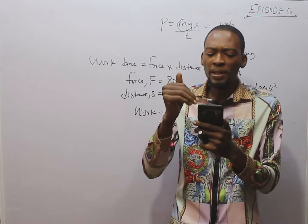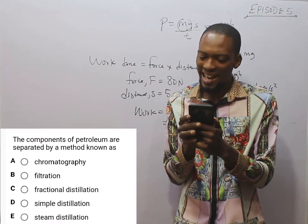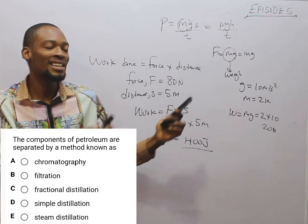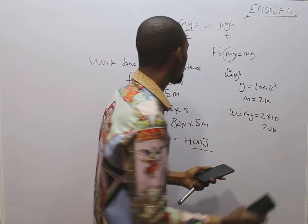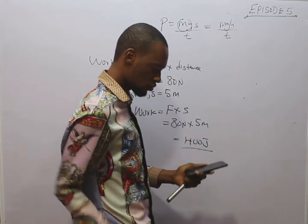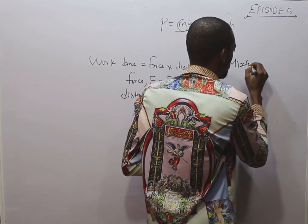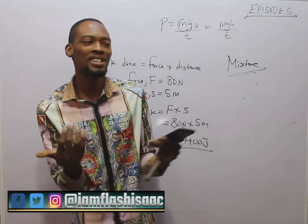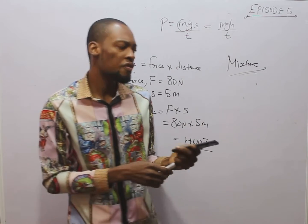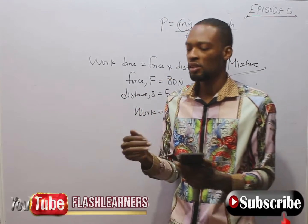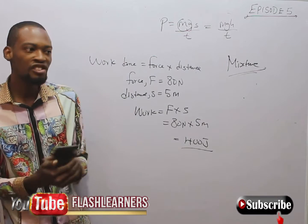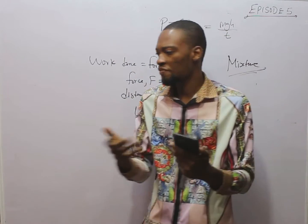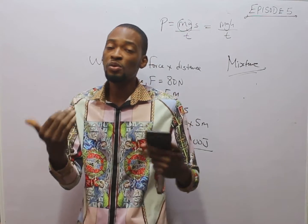The next question says: the components of petroleum are separated by a method known as blank. Now, when you hear separation in basic science and technology, it simply means something was mixed — there is or was a mixture. A mixture is a combination of two or more substances. When two or more substances combine physically, they are mixed and you can separate them. For example, if you pour sand inside water or beans inside rice, they are mixed. Depending on the type of mixture, you can choose a separation technique.